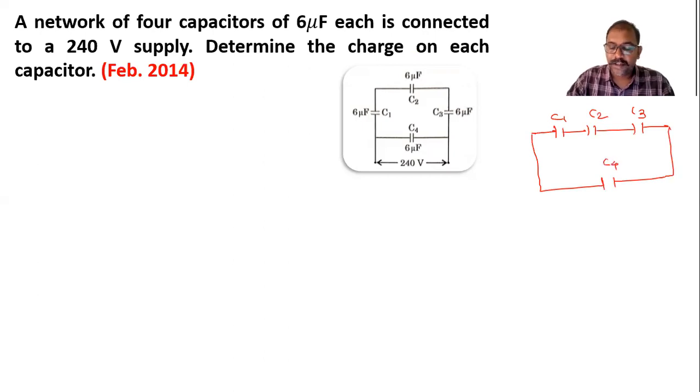It is in parallel with these three in combination, and a 240 volt is applied across this combination. Now the charge on C1, C2, and C3 I can write as Qs, and the charge on C4 I write as Q4, so we have to find these out.